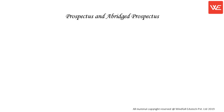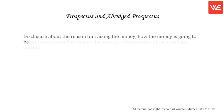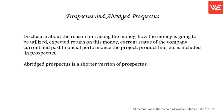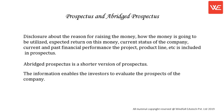Prospectus and Abridged Prospectus. Disclosure about the reason for raising money, how the money is going to be utilized, expected return on this money, current status of the company, current and past financial performance, the project, product line, etc., is included in the prospectus. Abridged prospectus is a shorter version of the prospectus. The information enables investors to evaluate the prospects of the company.